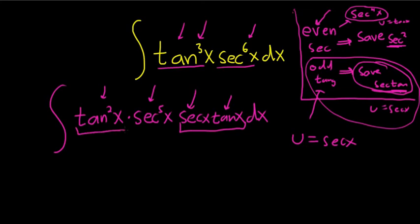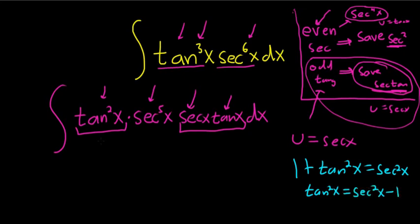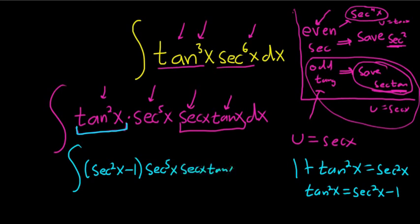So we just have to convert this into secant. Recall that 1 plus tangent squared x is equal to the secant function squared. That would mean that the tangent squared of x is equal to secant squared of x minus 1. So now we're going to convert this to secant. So this becomes parentheses secant squared x minus 1, secant to the 5th of x. And then we still have the secant x and the tangent x dx.